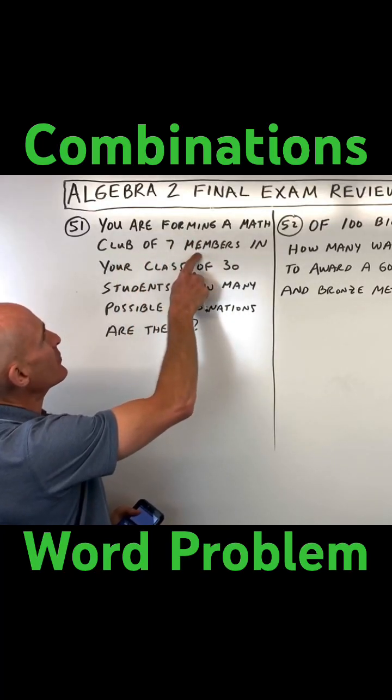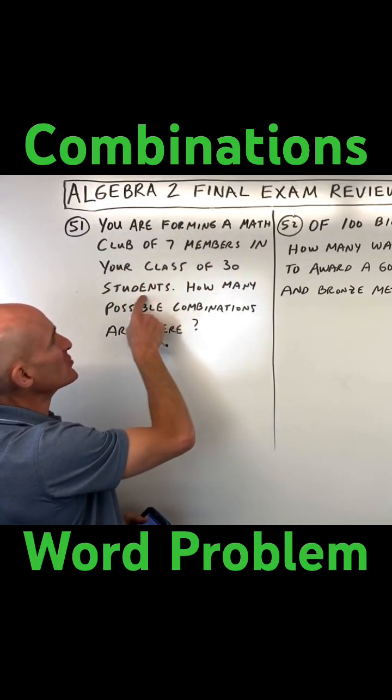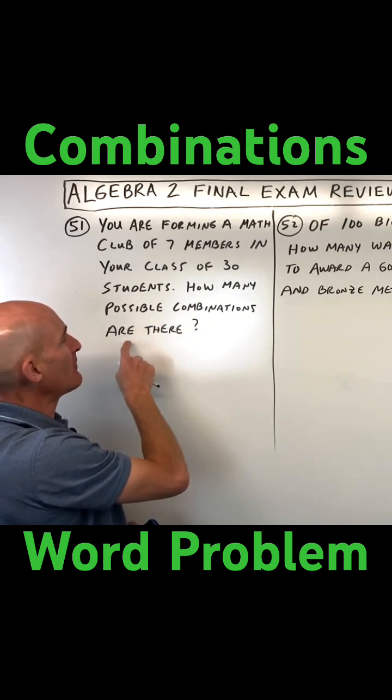You're forming a math club of seven members in your class of 30 students. How many possible combinations are there?